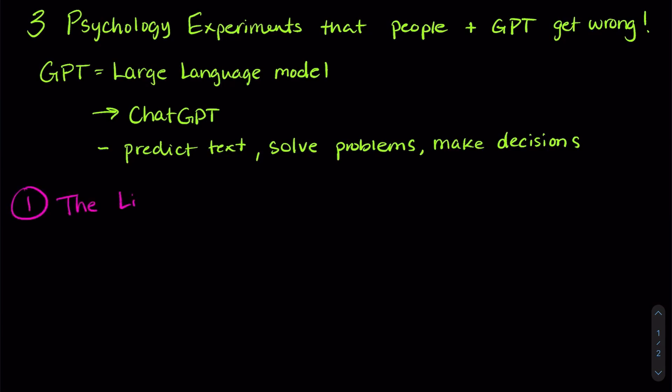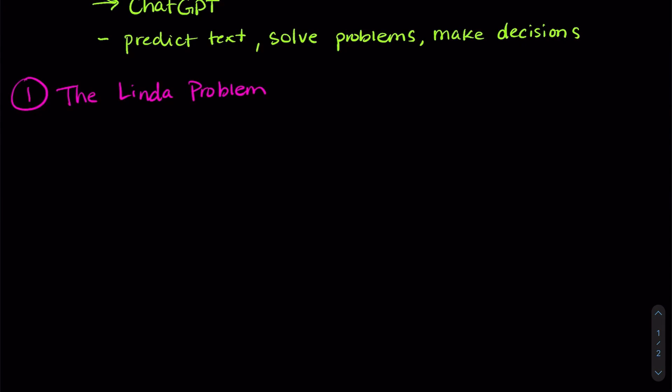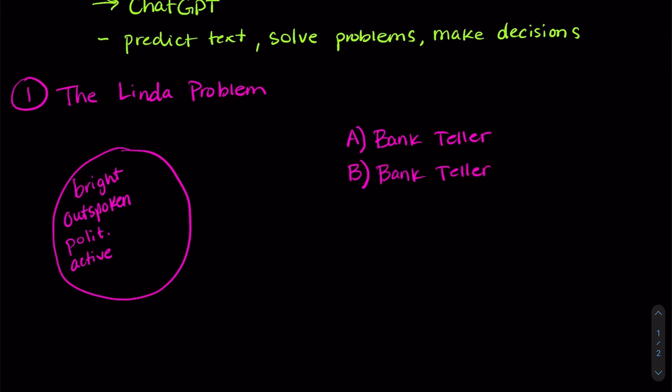So the first problem, let's get a fun color here, the first problem is called the Linda problem, and this is a hypothetical situation where you have to make a decision. So Linda is a bright, outspoken, and politically active person. Now the question is, is Linda also a bank teller, or is it more likely that Linda is a bank teller and an active feminist?